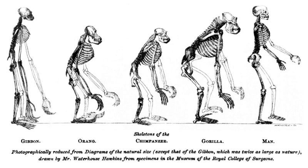Selective breeding can be unintentional, e.g., resulting from the process of human cultivation, and it may also produce unintended, desirable or undesirable results. For example, in some grains, an increase in seed size may have resulted from certain plowing practices rather than from the intentional selection of larger seeds. Most likely, there has been an interdependence between natural and artificial factors that have resulted in plant domestication.